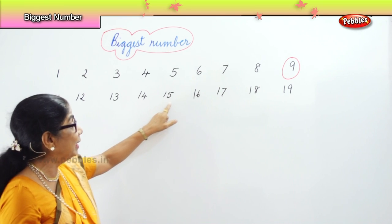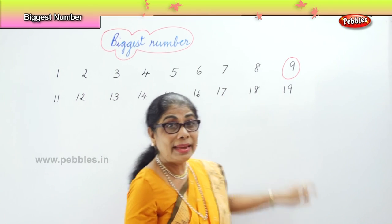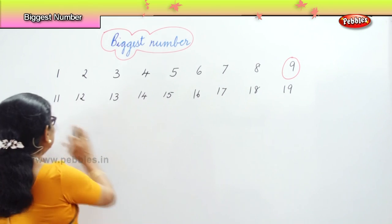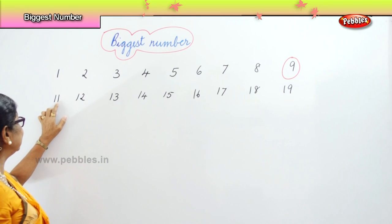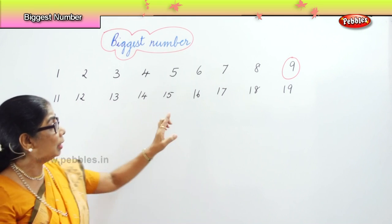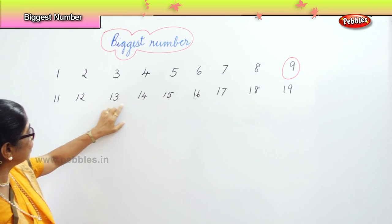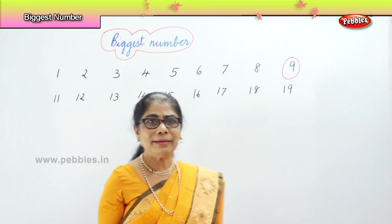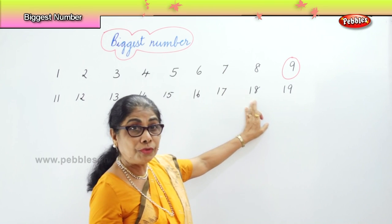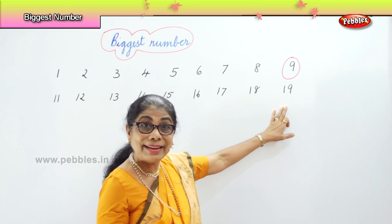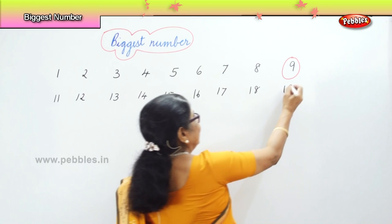Fourteen, fifteen, sixteen, seventeen, eighteen, and nineteen. Among these double digit numbers, the first number is one for all. The second number changes — one, two, three. We identify the biggest here: the second number goes up to nine. So definitely nineteen is the biggest among eleven to nineteen.